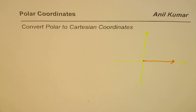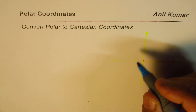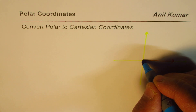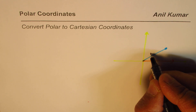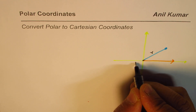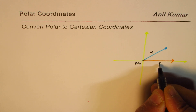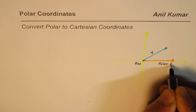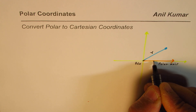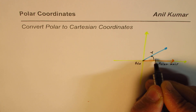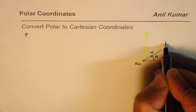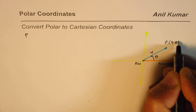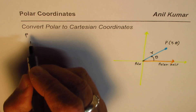If I have a point anywhere, that point is represented in terms of R and theta. So if I have a point here, this point will be represented by two things: the distance from the pole, and the angle from the polar axis, which is theta. So in general any point P will be written as (R, theta).